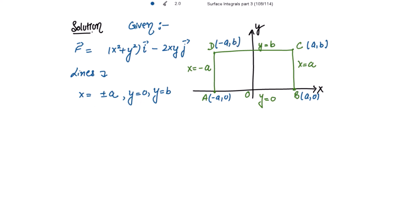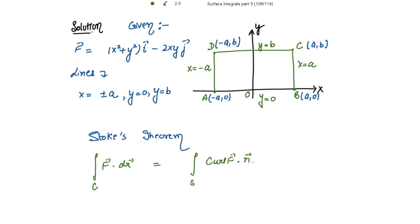So we need to verify the Stokes theorem. What is the Stokes theorem? It is a line integral over C of the dot product of F vector with dr vector, which is equal to the surface integral of curl of F vector and its dot product with n vector ds. Let's evaluate the left hand side first, and if the value of this integral equals the value of the integral on the right hand side, then we say that Stokes theorem is verified.